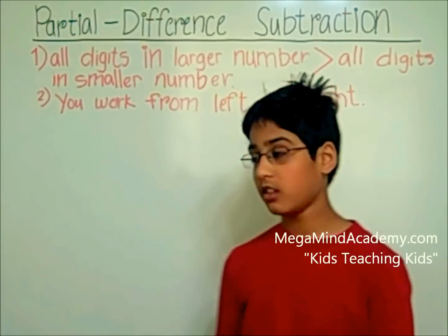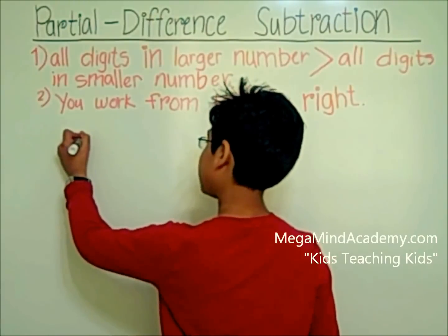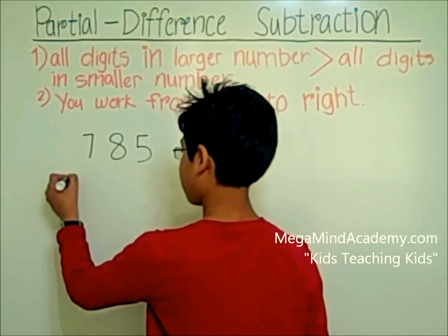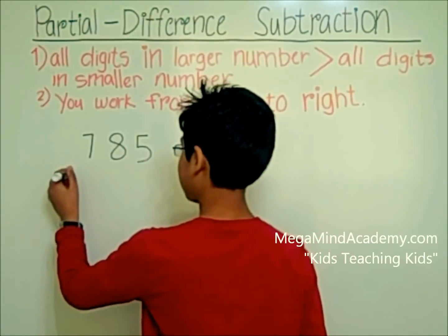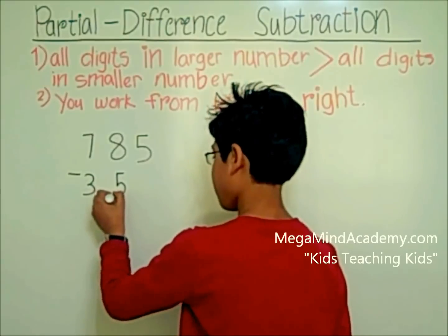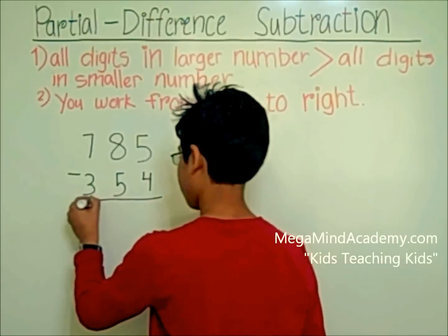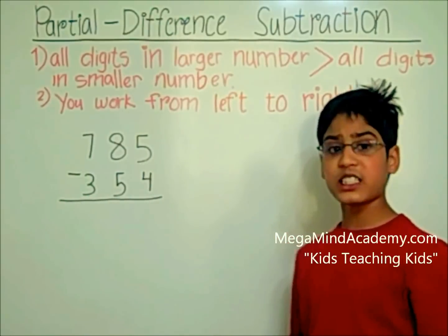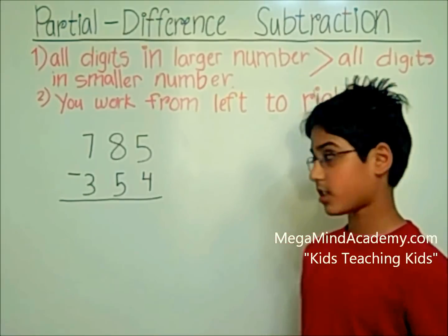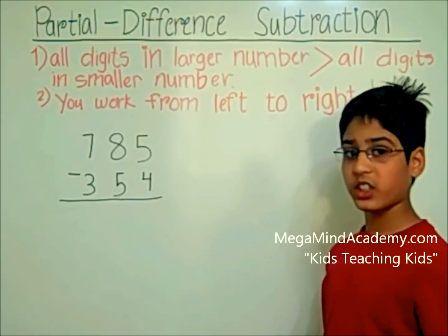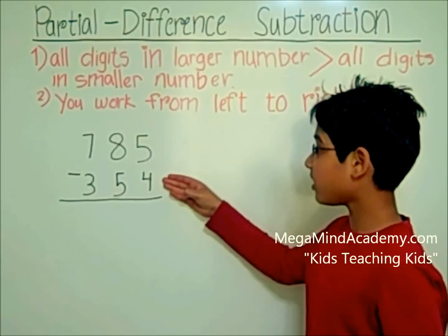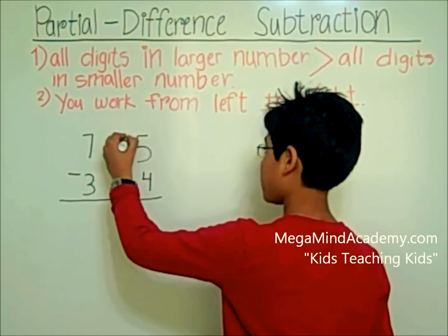Let's look at an example. Let's say we have to subtract 785 minus 354. Now let's find the place value for each of the digits in both numbers. Let's start with the rightmost digits. They are 5 and 4. Because they are the last digits, they are in the ones place.